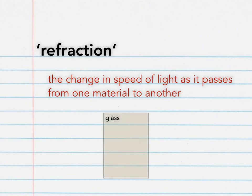This diagram shows a glass block in air. Here we can see the light bend towards the normal, the dotted line, as it passes from air to glass, and away from the normal as it passes from glass to air.